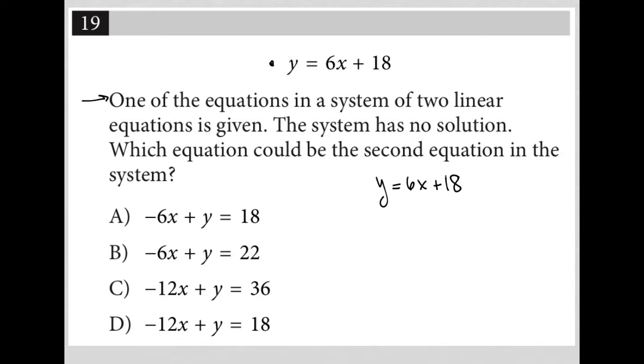The system has no solution. All right, so how does that even happen? A system will have no solution when both x and y cross out, right? And there's no way around it. Nothing you can do to make them not cross out.